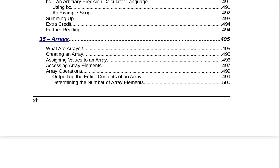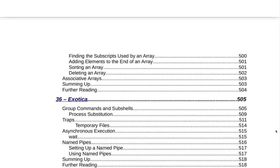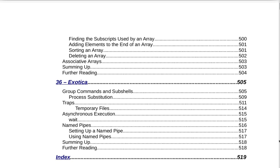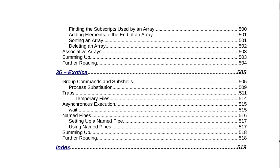Section 35 is Arrays on page 495. That covers what are arrays, creating an array, assigning values to an array, accessing array elements, array operations, outputting the entire contents of an array, determining the number of array elements, finding the subscripts used by an array, adding elements to the end of an array, sorting an array, deleting an array, associative arrays, summing up, and further reading on page 504.